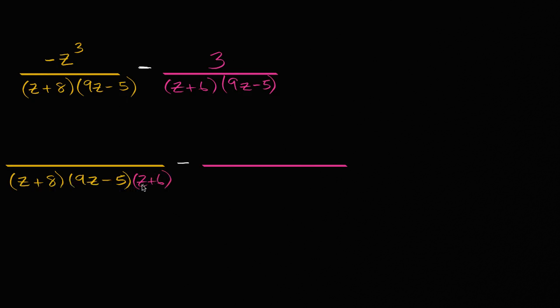Notice, just by multiplying the denominator by z plus six, we're now divisible by both of these factors and both of these factors, because nine z minus five was a factor common to both of them. And if you were just dealing with numbers when you were just adding or subtracting fractions, it works the exact same way.